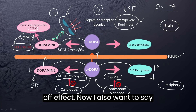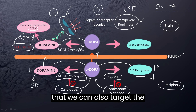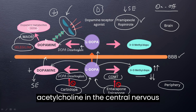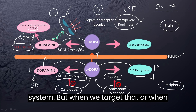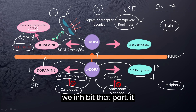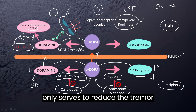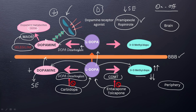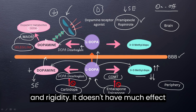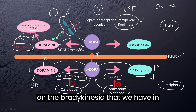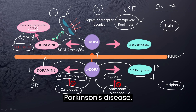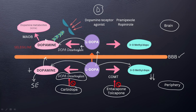We can also target acetylcholine in the central nervous system. However, when we inhibit that activity, it only serves to reduce the tremor and rigidity. It doesn't have much effect on the bradykinesia that we see in Parkinson's disease.